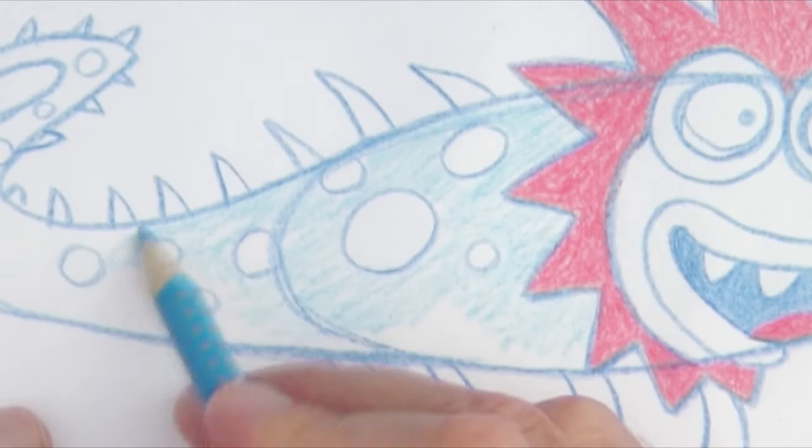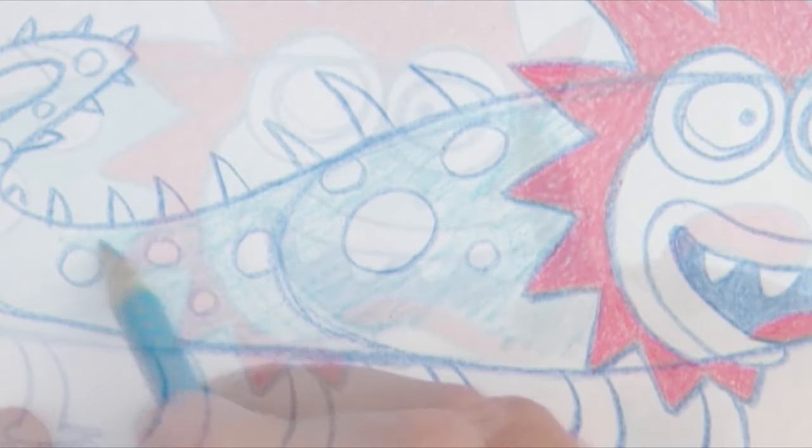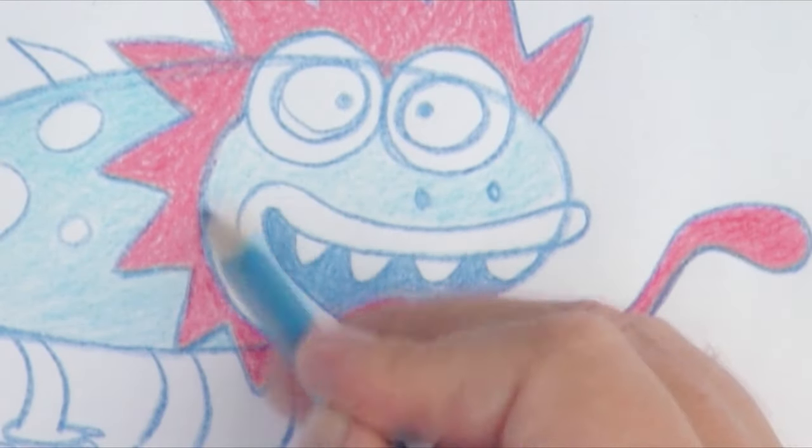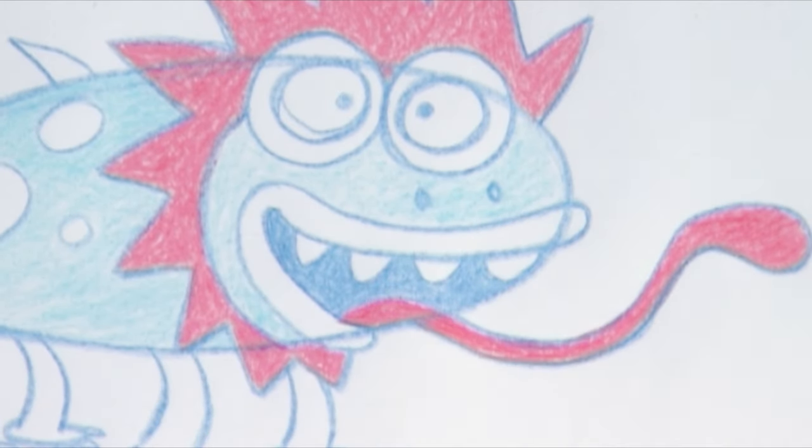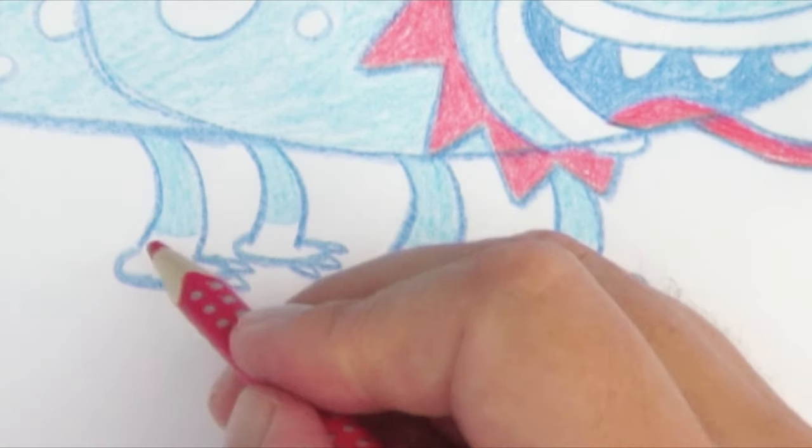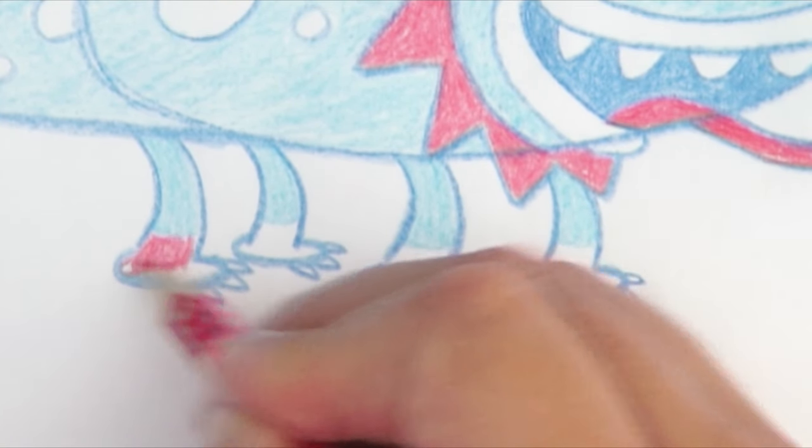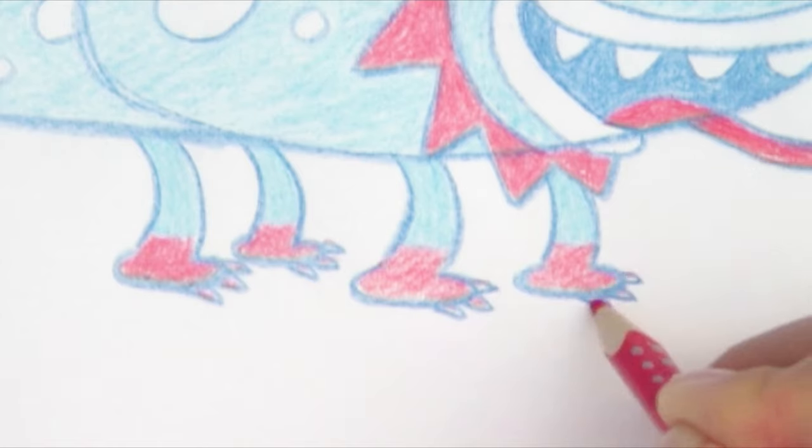After we've colored the rim and the tongue red, we begin with the blue color. The whole body, the tail, the head—everything is blue except for the feet, they are red. Then I grab my yellow pencil.